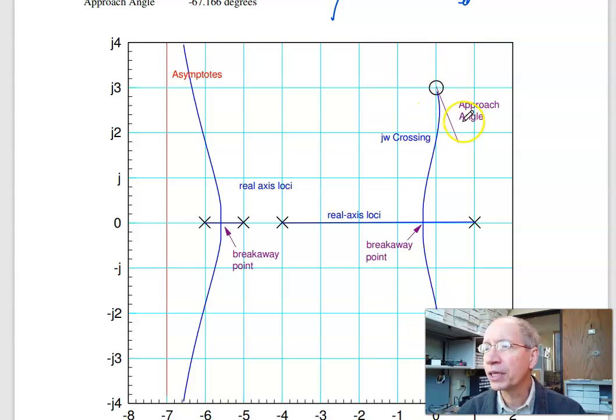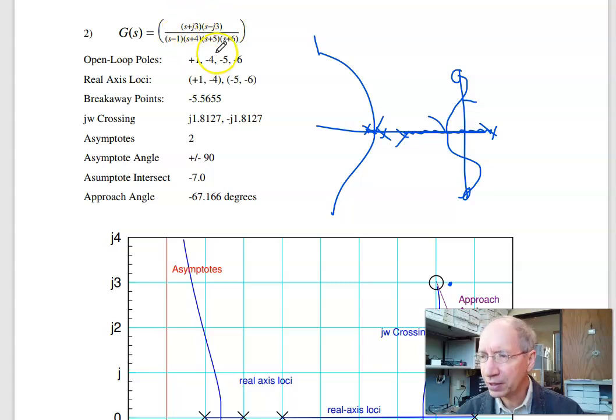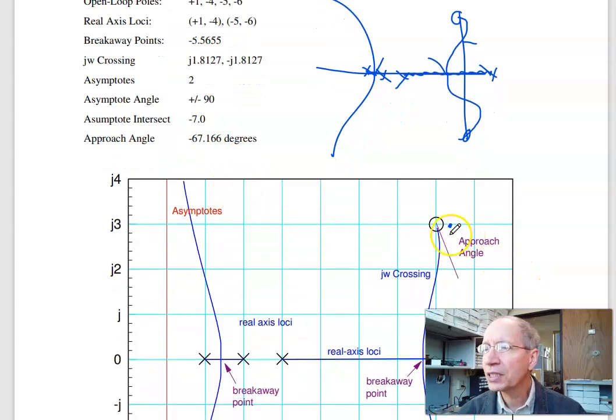Now to calculate the approach angle, again take this point, j3, take a point epsilon away from j3, analyze G(s), and what you'll wind up with is G(s) at s equals j3 plus epsilon is not 180 degrees. To make it 180, I need to subtract 67.